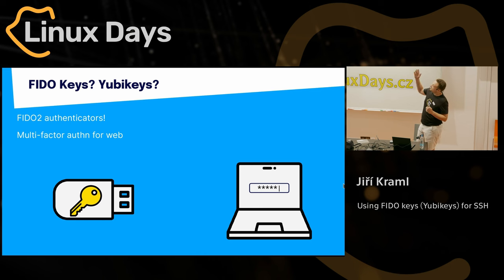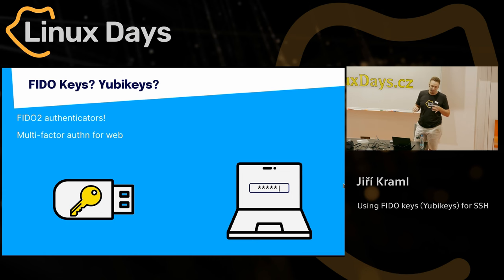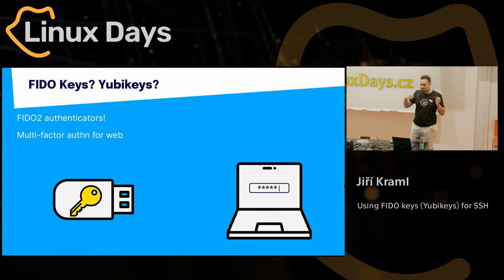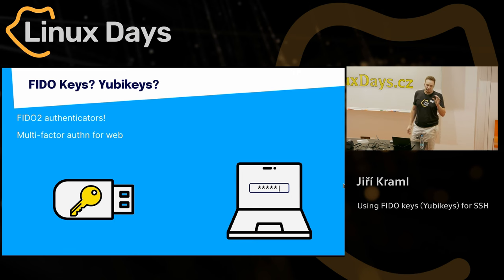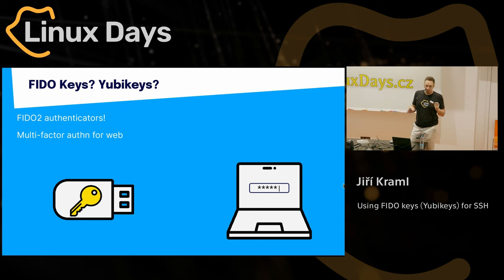The idea is that there is a key pair — public and private key. The server knows the public key; this little device has the private key. It signs some kind of cryptographic challenge, and that is how you prove that you're in possession of this private key. The trick is that this private key never leaves this little device. When you create a new key pair, it's not your computer that creates the private key — there's a certified cryptography chip inside this little USB stick, and that's where the key is created. That's the only place where this key is accessible ever. No program on your computer ever gets to see it — not your browser, not some kind of virus, and not even your operating system. That's basically how you bind an identity to a physical device.